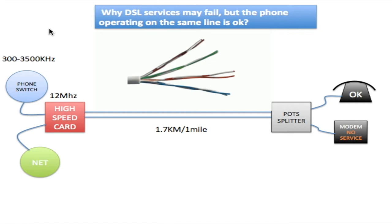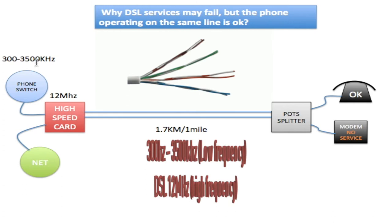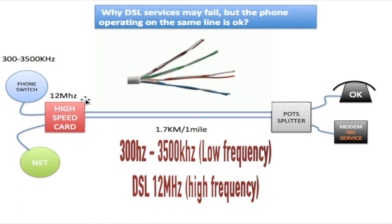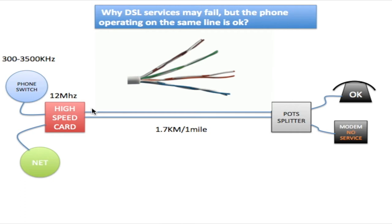One thing that jumps out right away is that the phone operates at a frequency between 300 Hz and 3,500 kHz, whereas the internet is operating at 12 MHz for this particular line. The phone sends its signal out onto the line.